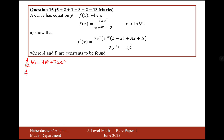And the differential of the bottom is going to use the chain rule. So that's e to the 3x minus 2 to the power of a half. The differential of the inside is 3e to the 3x, and then we reduce the power by 1 — multiply the power to the front. So it's e to the 3x minus 2 to the power of minus a half.